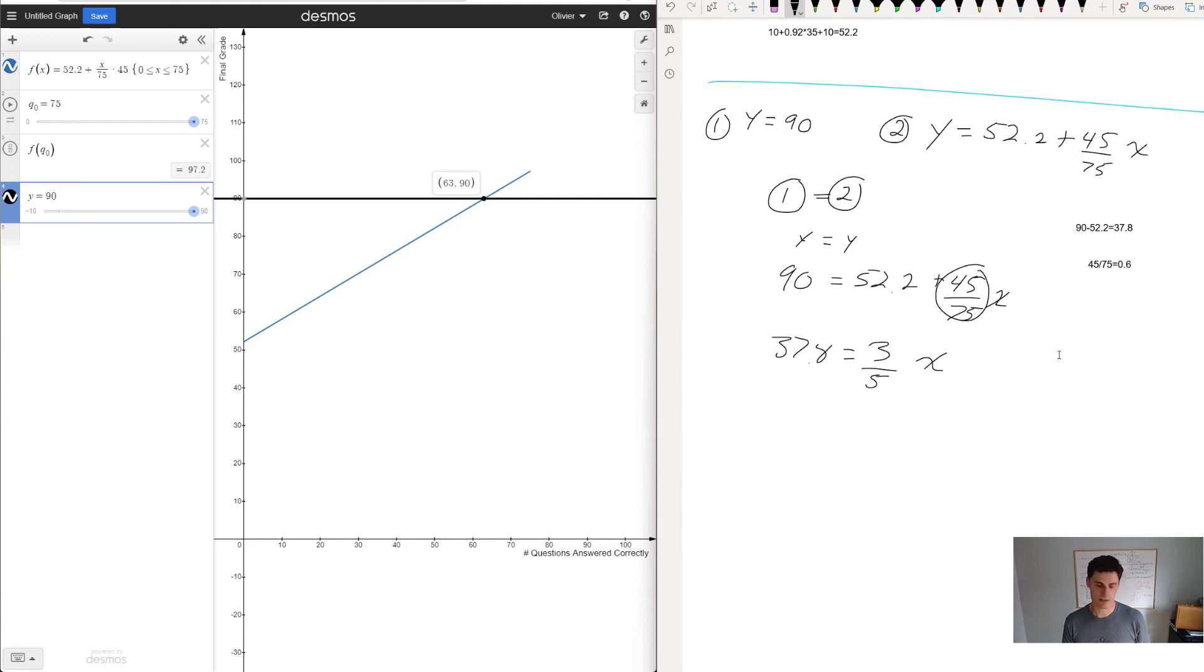I can divide 37.8 by 3/5 or multiply it by 5 and divide by 3. 37.8 times 5 divided by 3 equals 63. So x equals 63, the number of questions answered correctly. I need at least 63 because if I get 63 I finish with a 90 in the course. If I get more than 63 then I get even higher.